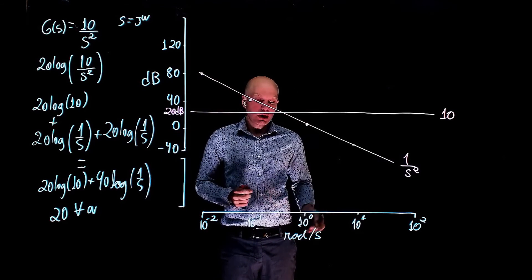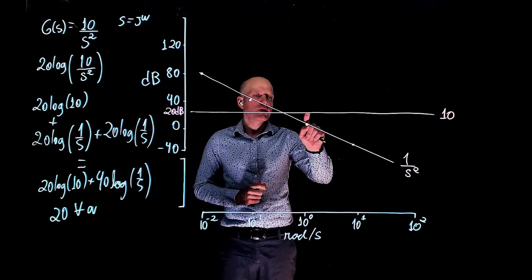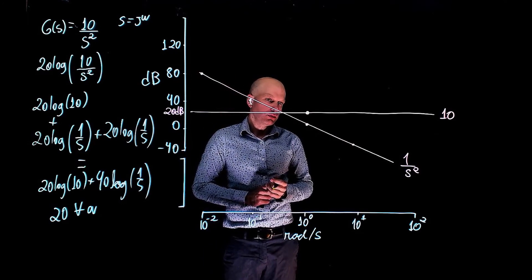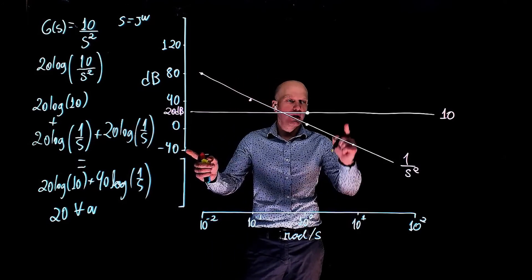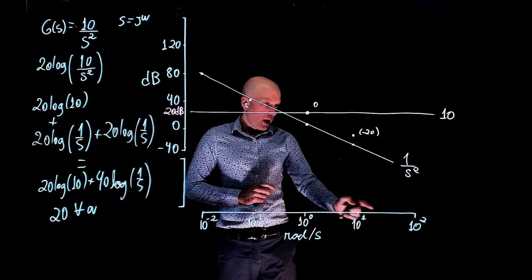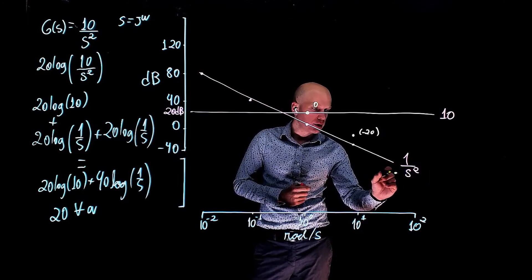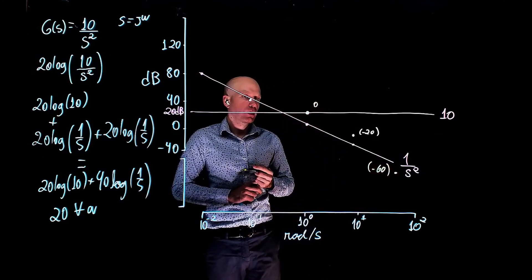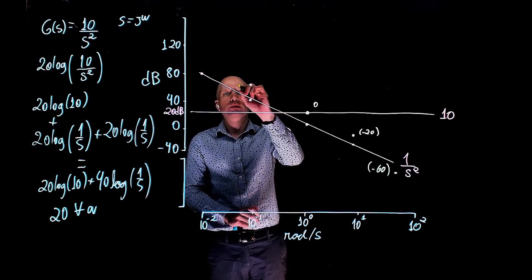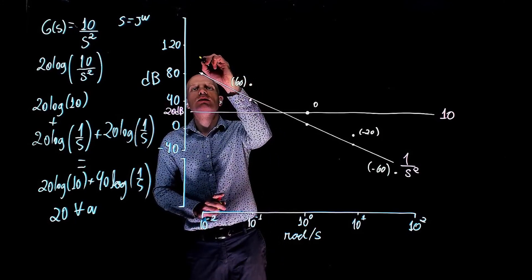Let's do that, starting with 10 to the power of 0. At 1 radian per second, the 1/s² curve is at 0 dB and the constant gain curve is at 20 dB, so 0 plus 20 is 20 decibels. At 10 to the power of 1, negative 40 plus 20 is negative 20 decibels. At 10 to the power of 2, negative 80 plus 20 is negative 60 dB. Going to 10 to the power of negative 1, 20 plus 40 is 60 dB. And at 10 to the power of negative 2, 20 plus 80 is 100 dB.